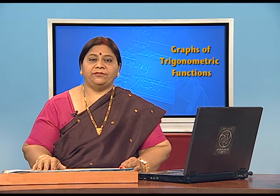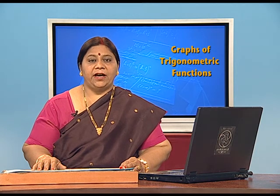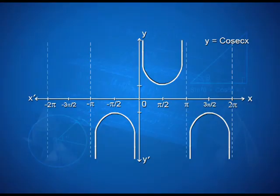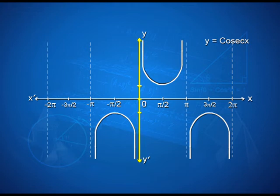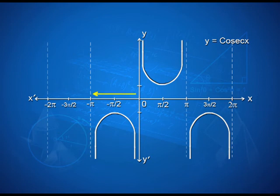Now we will draw the graph of y = cosec x. The x-axis is x'Ox and the y-axis is yOy'. We can draw the graph of y = cosec x between 0 and pi, between the origin and −pi, and between pi and 2 pi — with the last section being a mirror image of the graph between the origin and −pi.